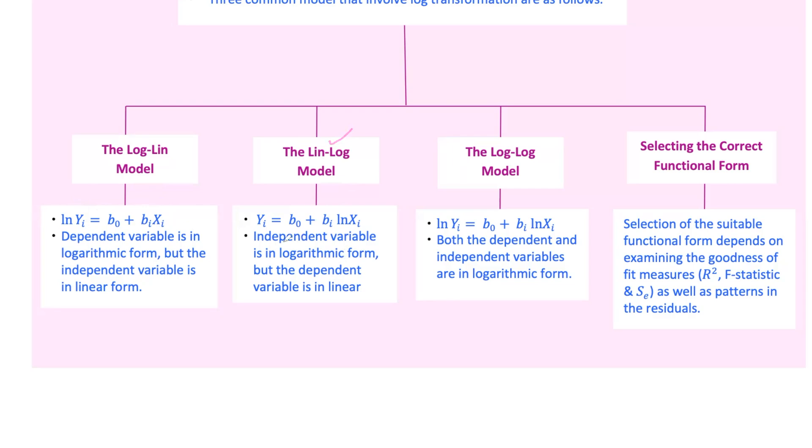Lin-log-model, the independent variable is in logarithmic form. This is useful when the effect of x on y diminishes as x increases. The slope coefficient represents the absolute change in y for a relative change in x. Suppose you're analyzing the relationship between the number of branches, x, a company has, and its total sales, y. You believe that as the number of branches increases, the marginal increase in sales diminishes. You would use the lin-log-model to capture this relationship. If you find that b1 is 200, it means that a 1% increase in the number of branches leads to an increase in sales by 200 units.